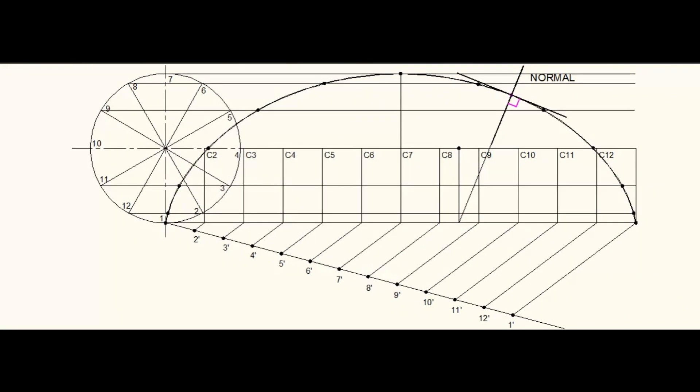Draw a perpendicular line to the normal through the same point of the curve. It is a tangent.